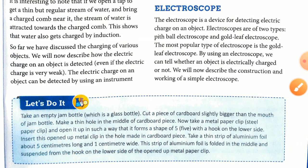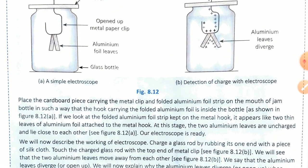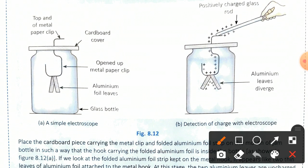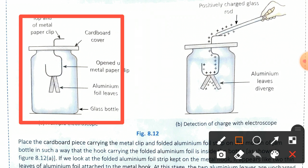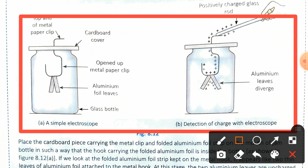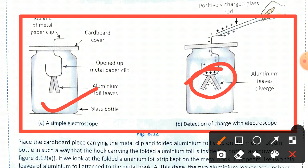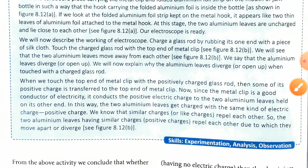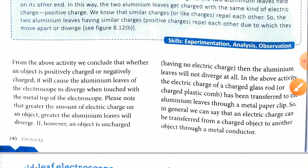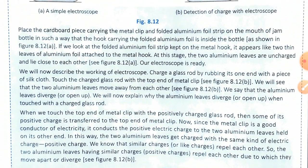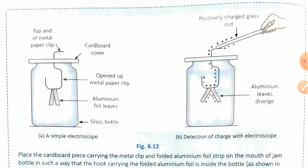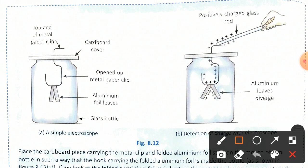We will now describe the construction and working of a simple electroscope. The device consists of a metal paper clip, cardboard, open metal paper, aluminum foil leaves, and a glass bottle. When a charge is passed, the leaves move far apart. This is the working of the electroscope — please read it properly and ask any doubts in the comment section.